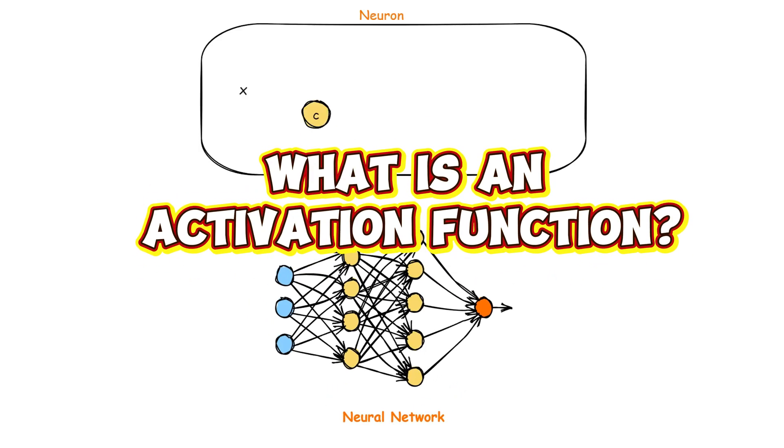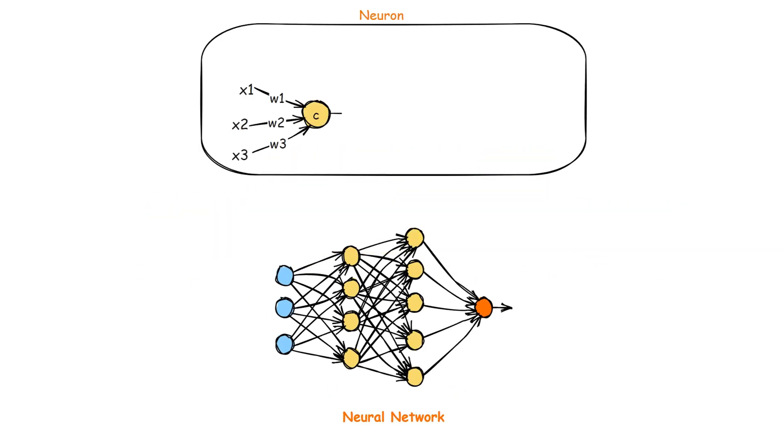What is an activation function? An activation function is a critical component in neural networks that determines a neuron's output. After a neuron processes its inputs by computing a weighted sum, the activation function decides whether that neuron should be activated or not, hence the name.